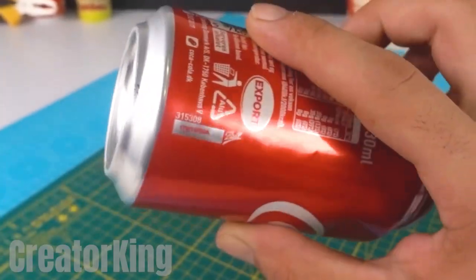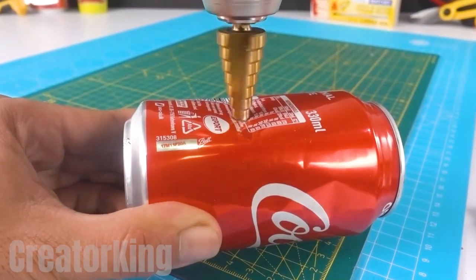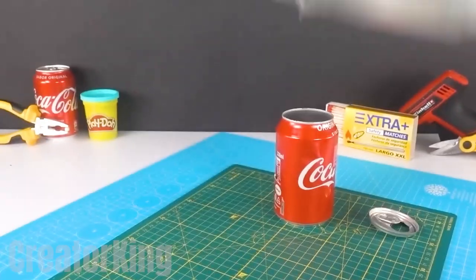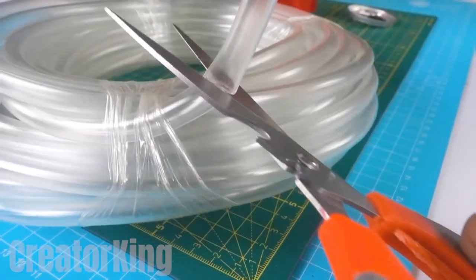Pierce one side with the same drill and then find a whole roll of tubing. Cut a good-sized piece with a pair of scissors, insert it into the larger hole, and thread it through the side hole.